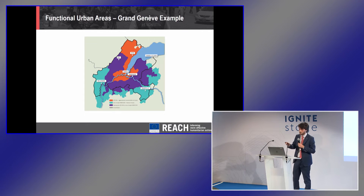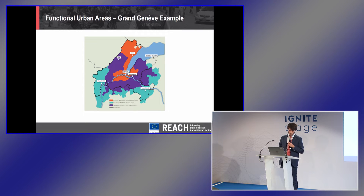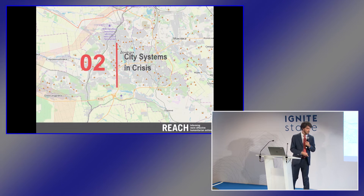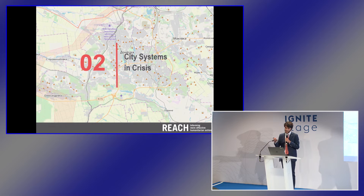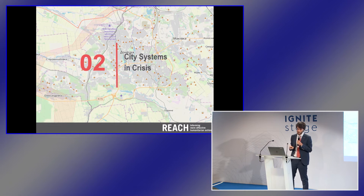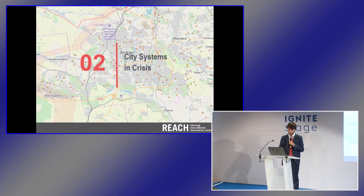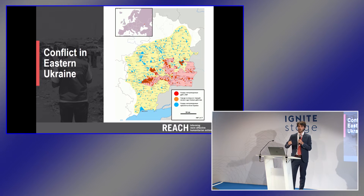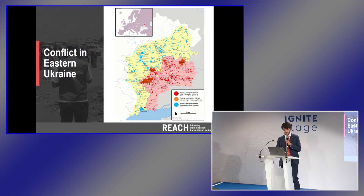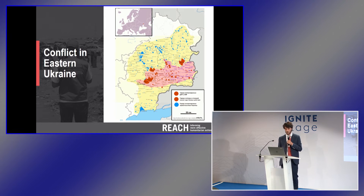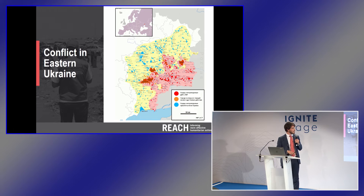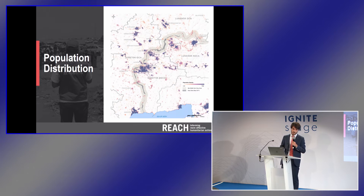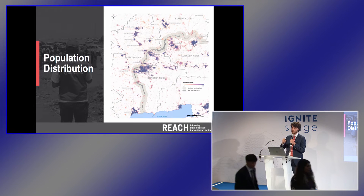Urban planners are now adapting this thinking — you can see it in the planning assumptions of Le Grand Genève, an urban development program around Geneva. In normal times these networks operate in a somewhat functional manner. So what happens to these networks when a crisis occurs? I'm going to talk about city systems in crisis, using conflict as an example — though you can apply this to any type of crisis. The map shows the city of Donetsk and Makiivka in eastern Ukraine. Since 2014, the eastern regions of Donetsk and Luhansk have been affected by conflict between the Ukrainian army and separatist forces.